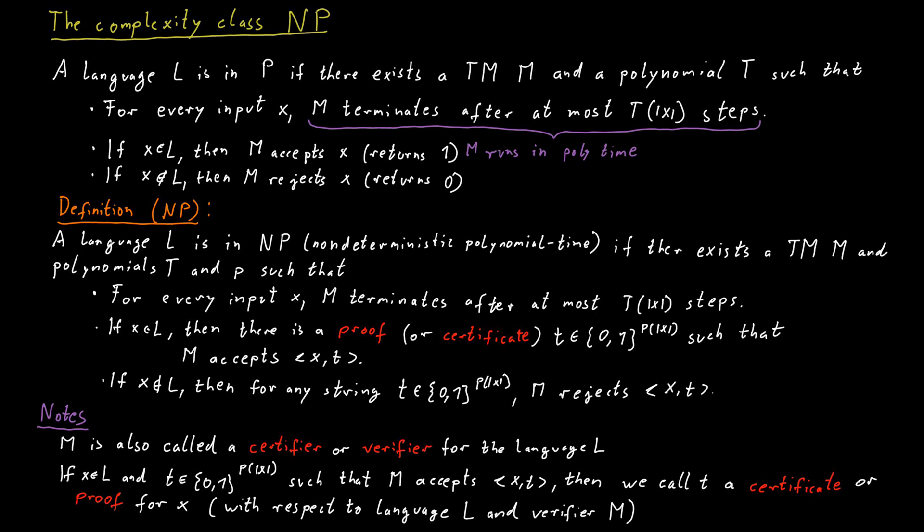Intuitively, the way you can think about this class NP is as follows. If you have a word in the language, then it should be possible to convince somebody that the word is in the language by giving them some kind of proof for that fact. So you give them the word and in addition, you give them some extra information. And with this extra information, they can check that the word is really in the language, and they can check this efficiently in polynomial time.